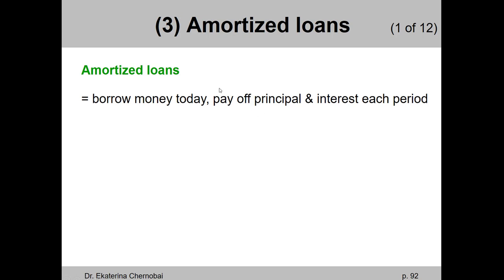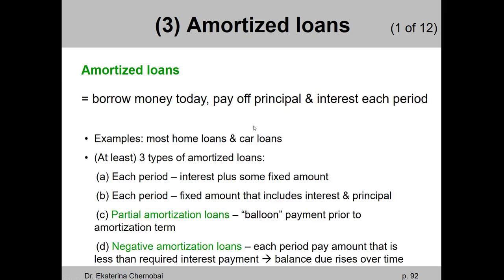Now let's look at the most complicated one of all, which is probably the most common one: amortized loans. That's when we make payments regularly during the time the money is borrowed until everything must be completed and all the payments are made. Each of these regular payments includes two things: interest and principal. Home loans and car loans are examples where you always see this type, the amortized loans.